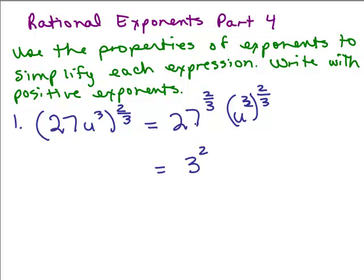So the cube root of 27 is 3 and then you could square it. Now some of you can do that all in one step. And over here we're going to use our law of exponents multiplying exponents. When you multiply 3 times 2 thirds the 3's cancel, so you get u squared. So then we get 9u squared for our answer.